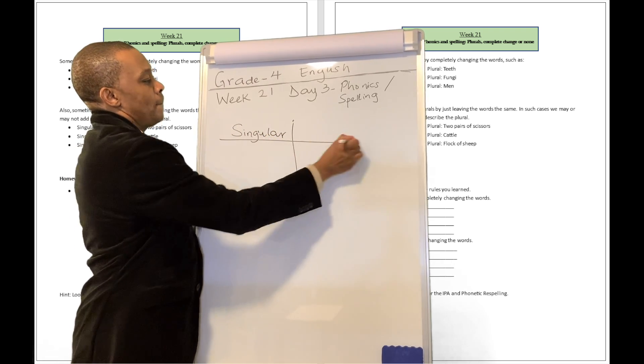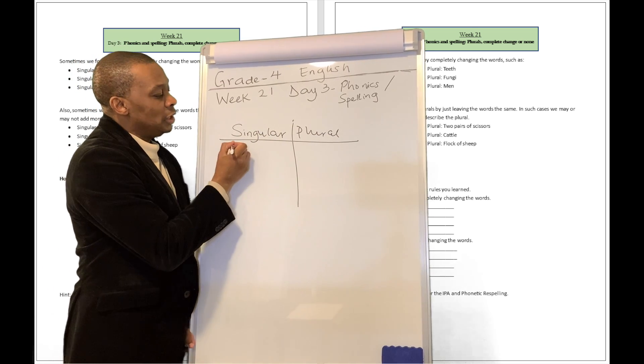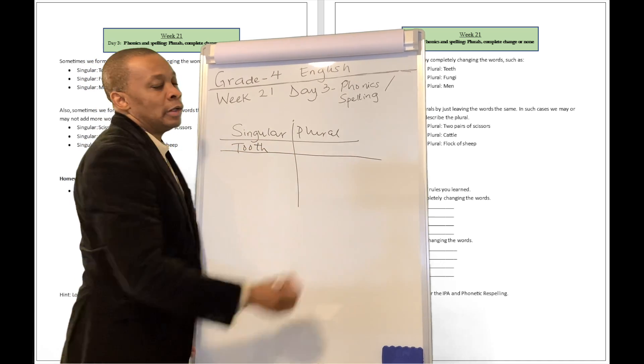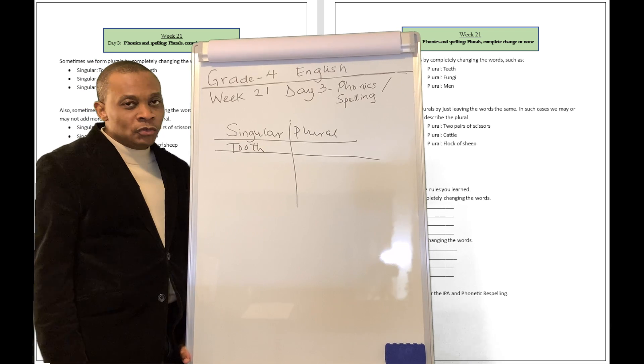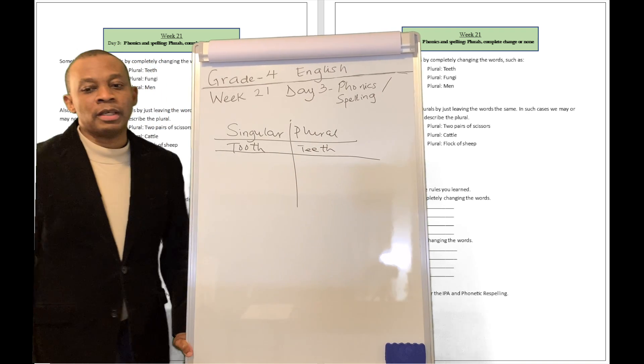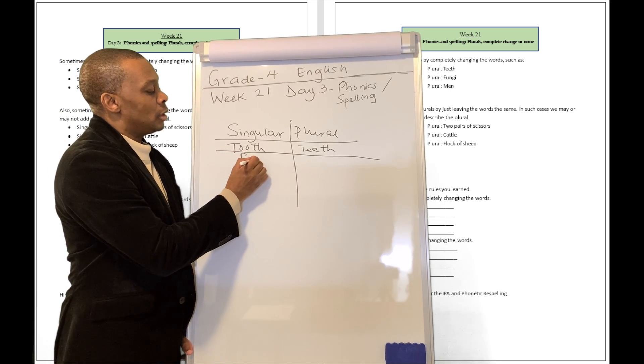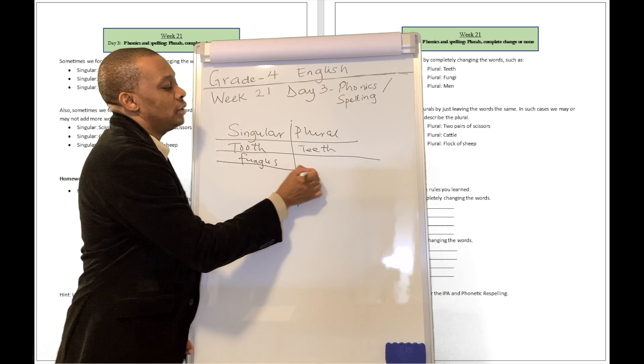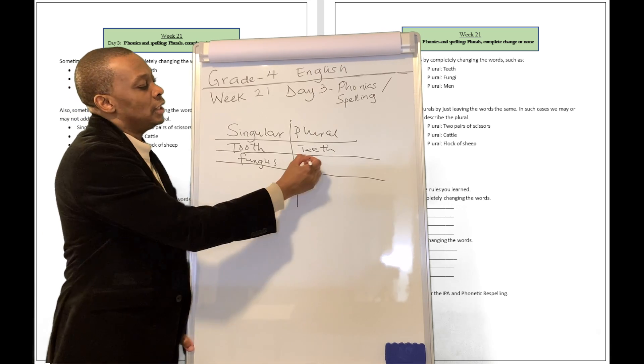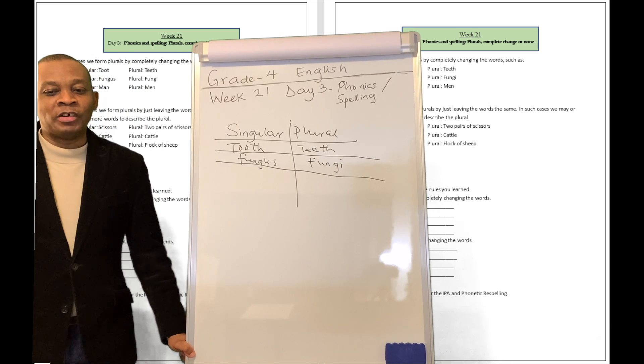Singular and plural. Here we go. So if you see a word like tooth and you want to form the plural of this word, well, you're not going to say tooths. No. We say teeth. What about a word like fungus? What is the plural of fungus? Well, the plural of fungus is fungi.